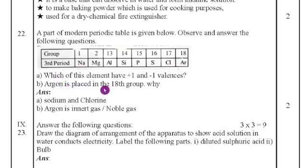B question. Argon is placed in the 18th group. Why? Because it is inert gas or noble gas or 0 group element. Because of that it kept in the 18th group elements.